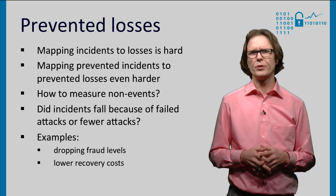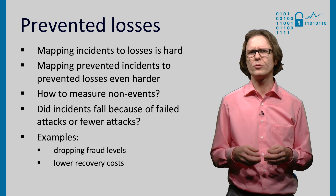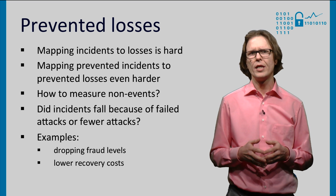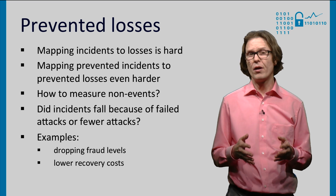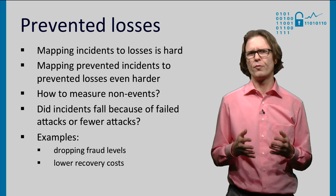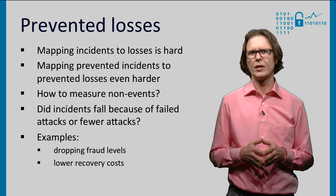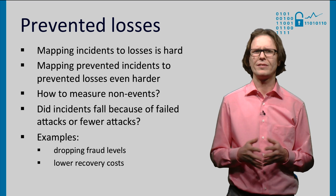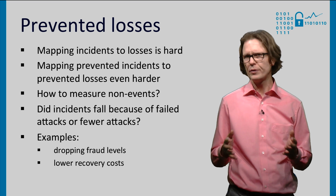A final indicator of the security level are prevented losses. Mapping incidents to losses is hard, as it requires us to quantify intangibles. For example, it's hard to quantify the losses after a data breach, like the one that happened at the US retail chain Target. It's even harder to map prevented incidents to prevented losses, as that would require us to forecast and monetize the consequences of an incident that didn't happen. Moreover, the causation between an incident that didn't happen and the reason why it didn't happen is typically hard to establish. Did incident rates drop because of failed attacks or because of fewer attacks?